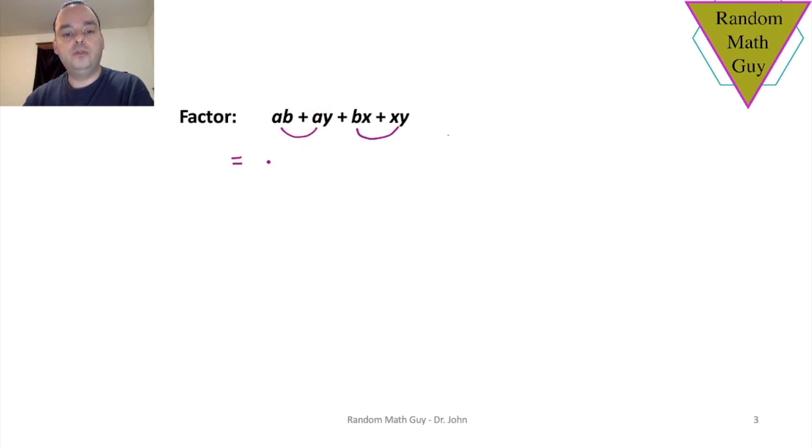In the first pair of terms, a is common. And if you take the a out, you're left with b plus y. In the second pair of terms, we can take an x out. And what do you notice? When you take the x out, imagine those x's disappeared, you would have b plus y again. And that's it.